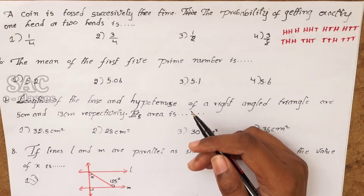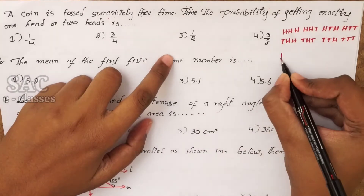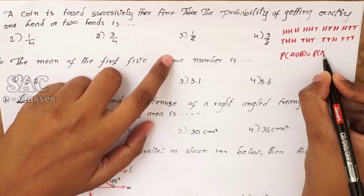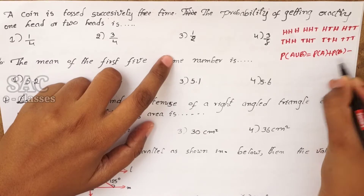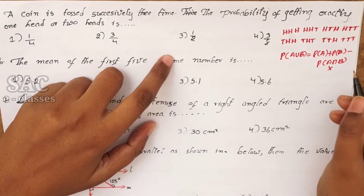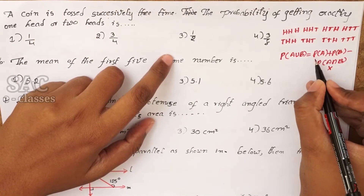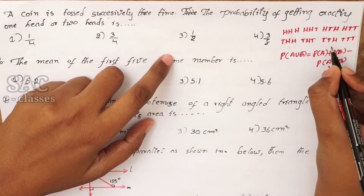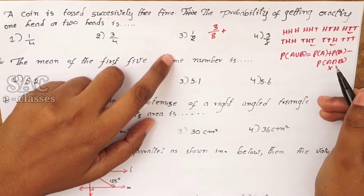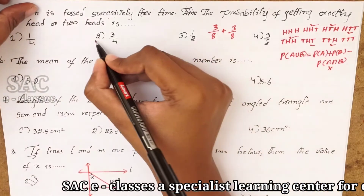A coin is tossed 3 times. Find the probability of getting exactly 1 head or exactly 2 heads. Since these are mutually exclusive events, P(A∪B) = P(A) + P(B). The probability of exactly 1 head is 3/8 and exactly 2 heads is 3/8. So the answer is 3/8 + 3/8 = 6/8 = 3/4.